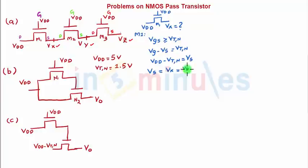And in this case, VDD is 5 volts and Vtn is 1.5 volts. So Vx is 3.5 volts. So this is my value of Vx for transistor M1.